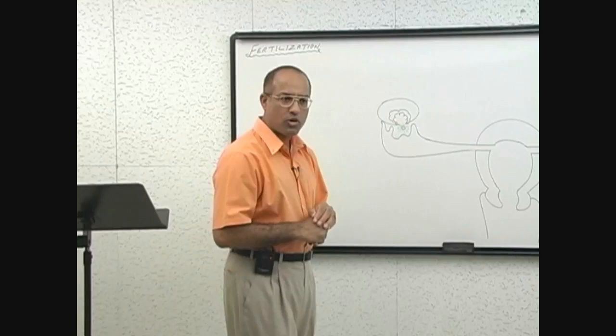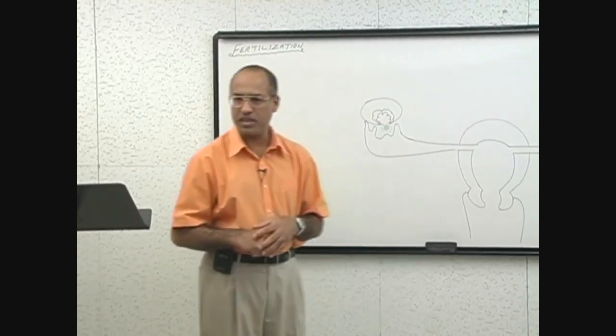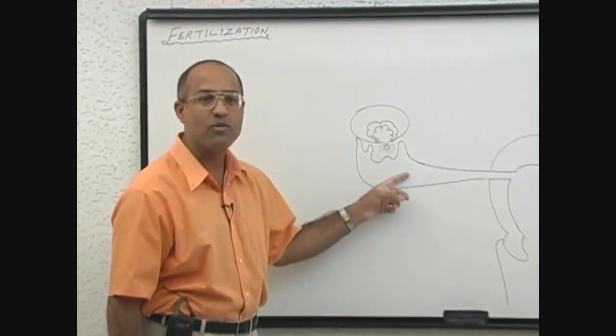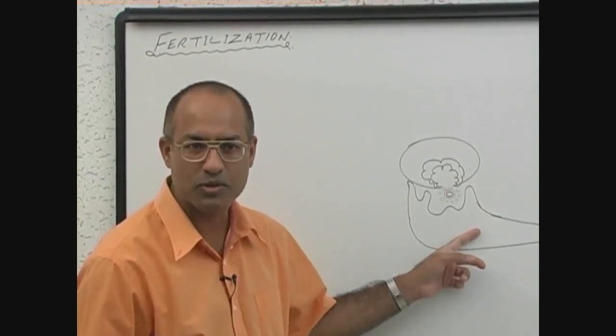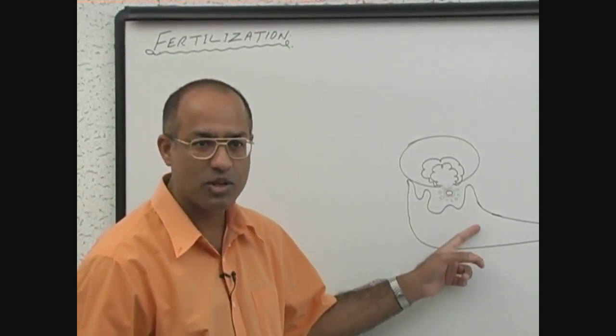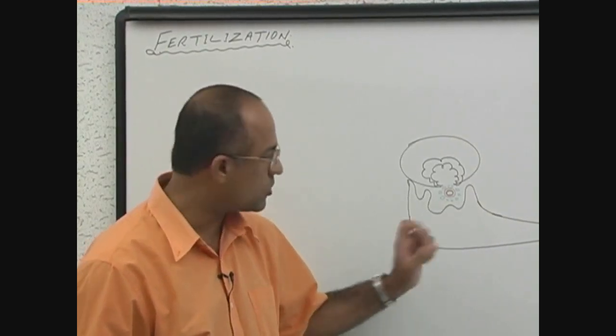Now what is the most common site of fertilization in human beings? Which is the most? Ampulla of? Ampulla of the fallopian tube or ampulla of the uterine tube. There are ampulla of many other things in the body. So it is the ampulla of the fallopian tube or uterine tube.